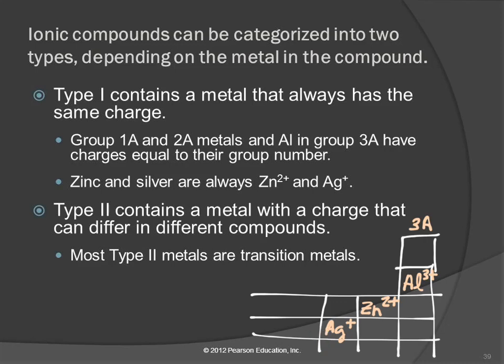That's not why they have those charges — that's how I remember what charges they have. I find aluminum is in group 3A, so it's 3+, and then we go down the stairs: plus 2, plus 1. These type I metal ions are the ones in groups 1A, 2A, 3A, zinc, and silver. It's like a little chant: 1, 2, 3, zinc, or silver. Those form one ion, and those are called the type I ionic compounds.